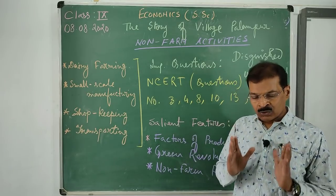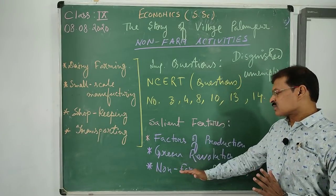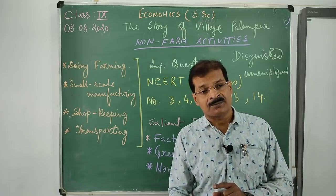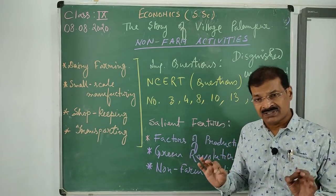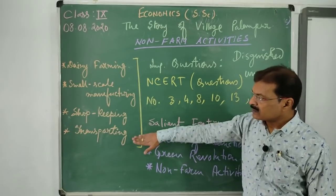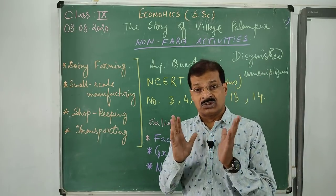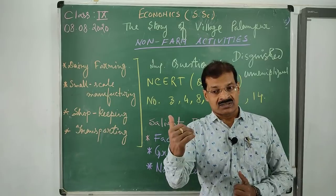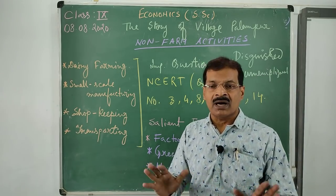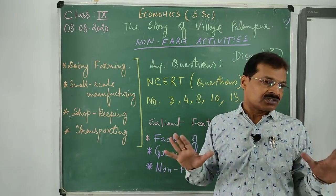The green revolution has been discussed in detail - the notes along with its merits, demerits, and limitations are equally important. Last but not least, non-farm activities - those activities not directly related to agriculture - are called non-farm activities. This is the end of the chapter.